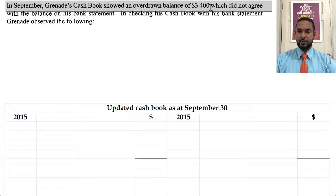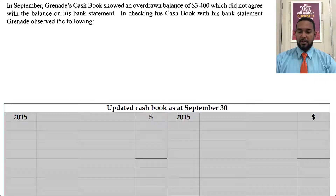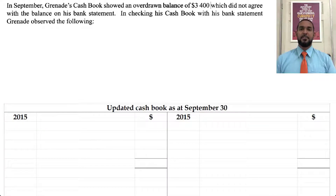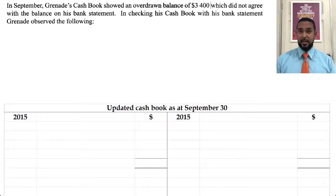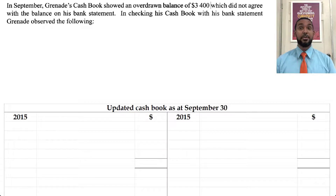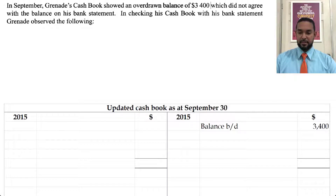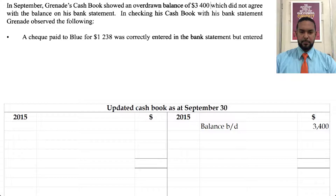We have an overdrawn balance of 3,400. An overdraft is a situation where we have spent more money than we have in the bank and the bank has lent us the money to cover it. Of course that's a pre-arranged facility — they need to make sure you agree to pay it back with interest. So it's a liability and will therefore have a credit balance at the start.